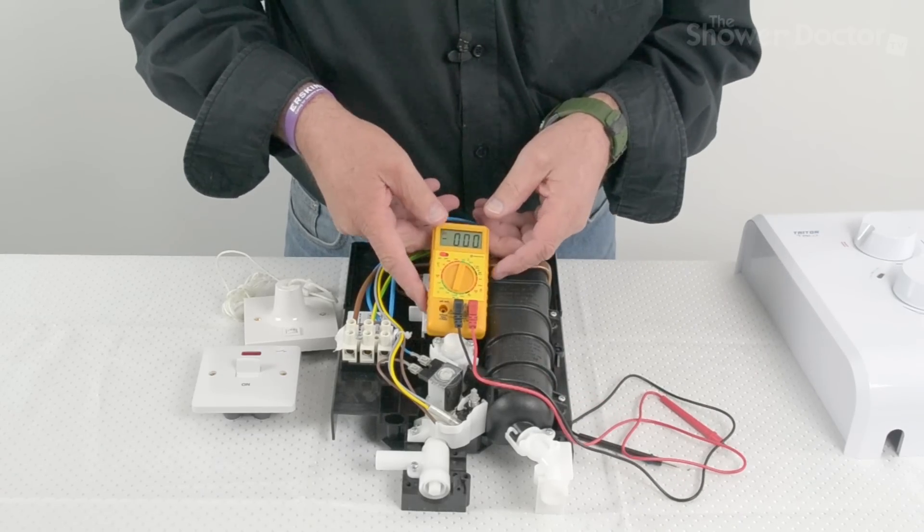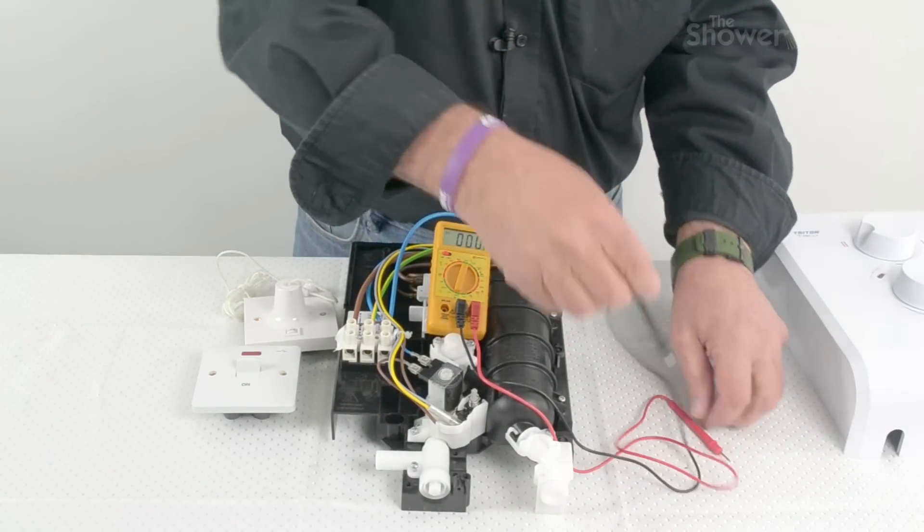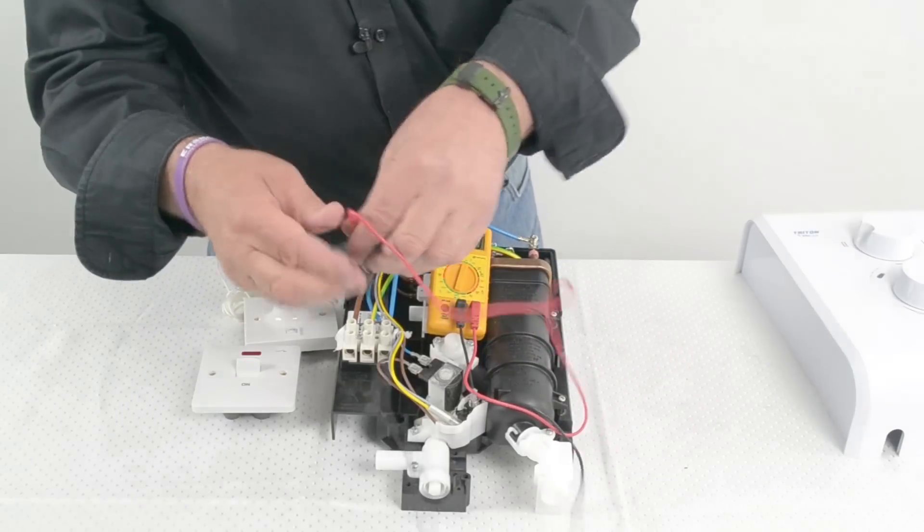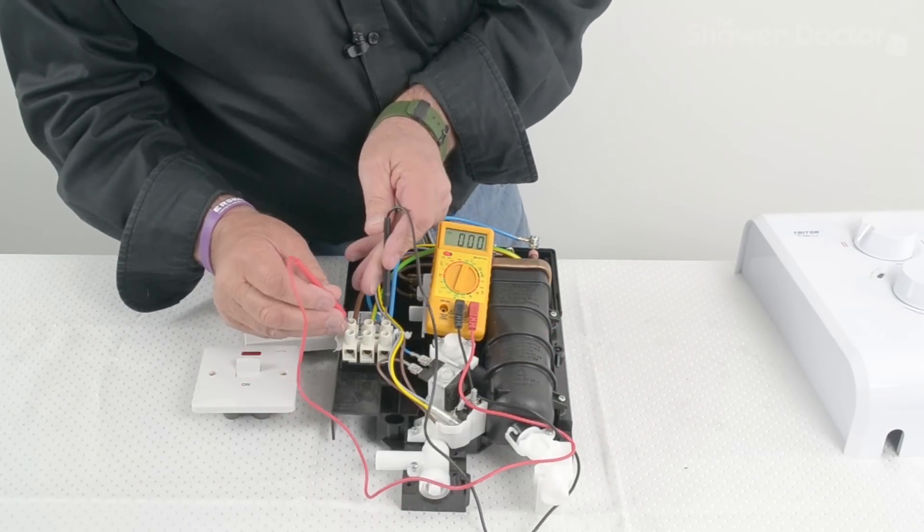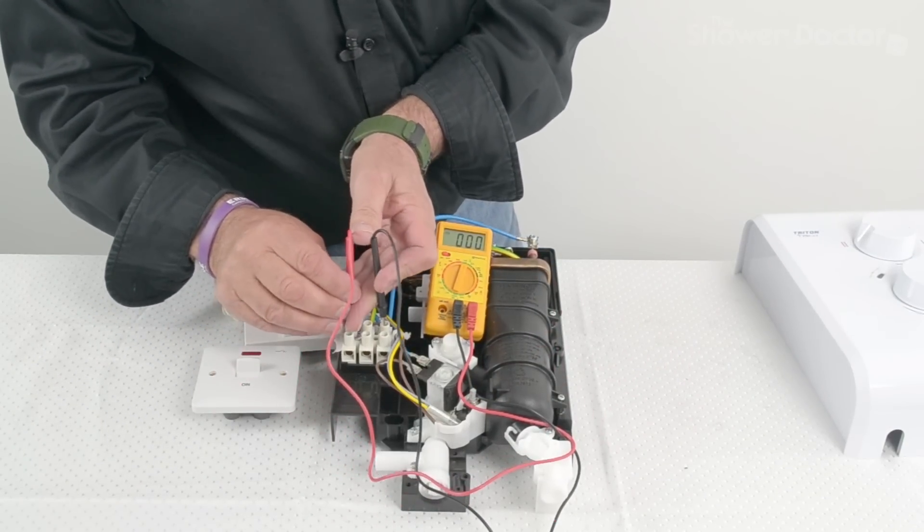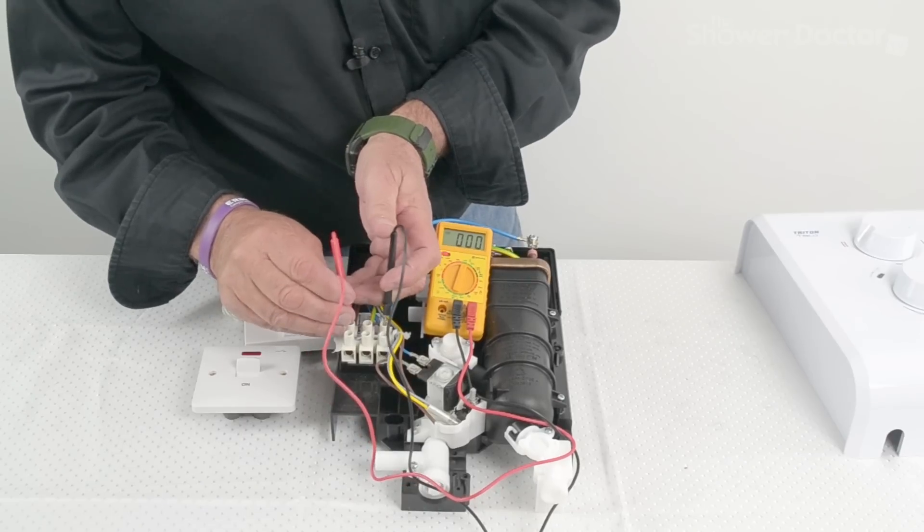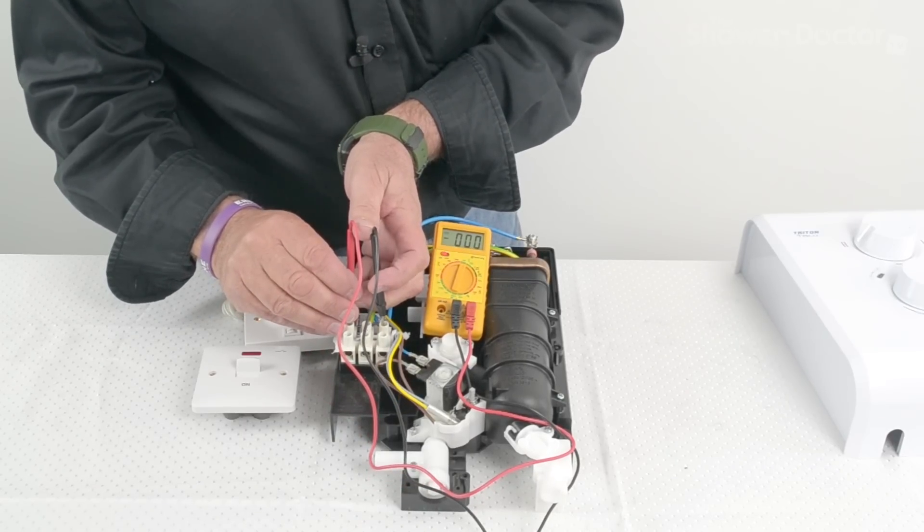So now all we need to do is carry out the test and with the multimeter set then we just need to pop the two probes into the terminal block here. Now obviously there's nothing here because it's not wired in but you should be getting a reading as I say between 230 and 220.